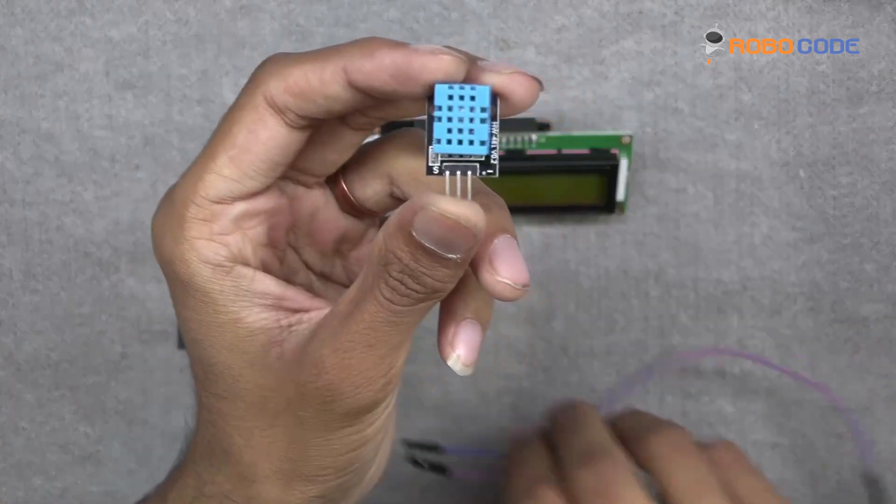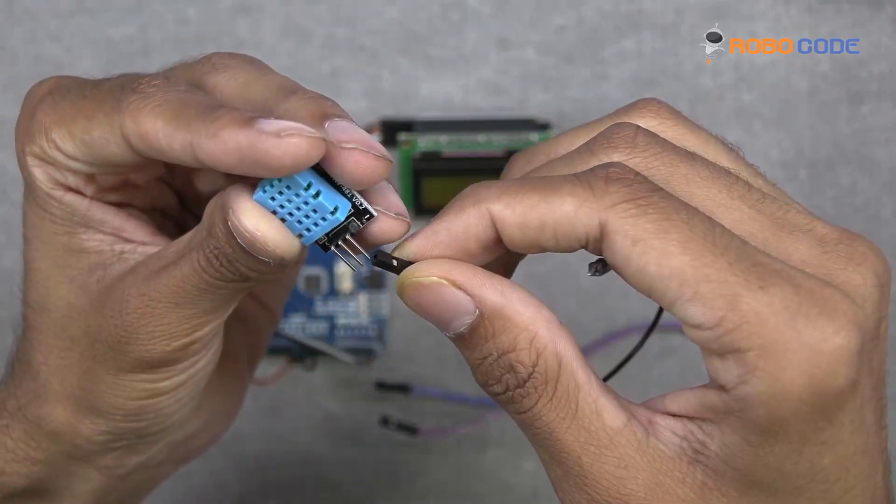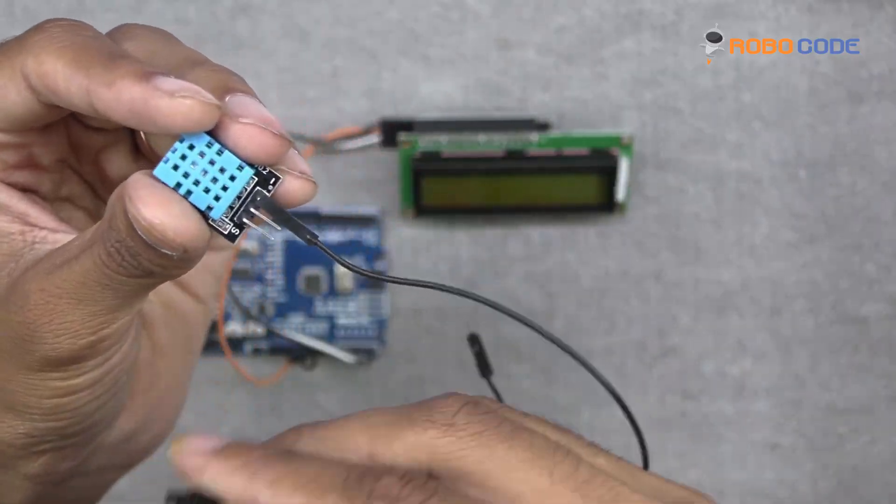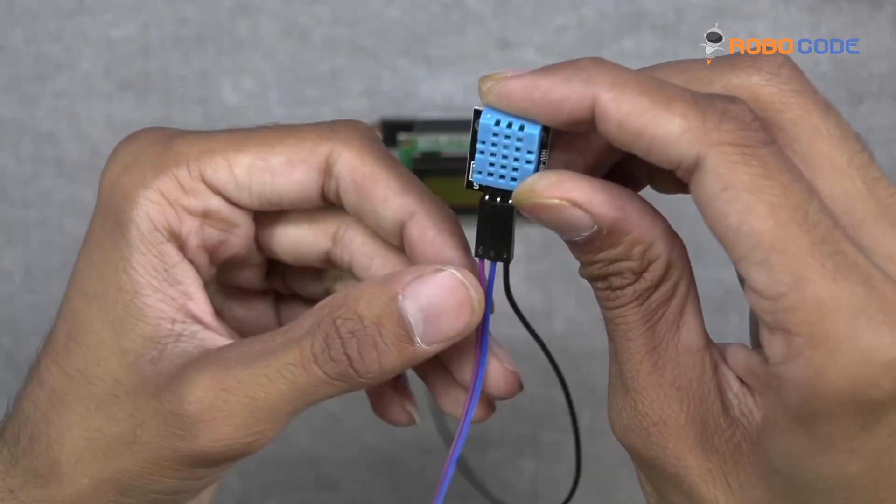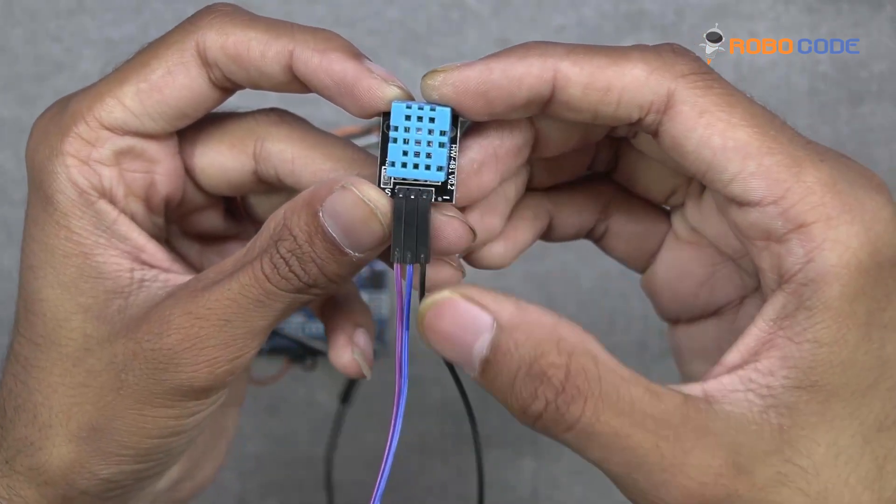Then we will take the humidity sensor, it has three pins. We will connect all three pins with three jumper wires, male to female: black, blue, and purple wires. You can take any wire but just remember the wire color so there is no confusion.